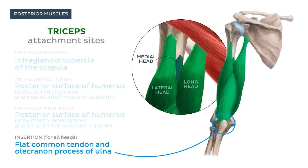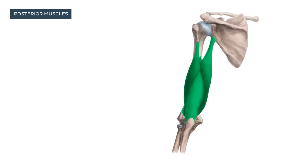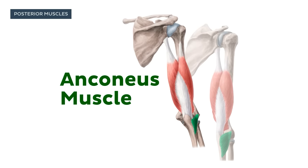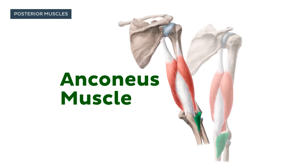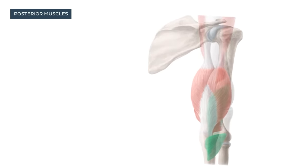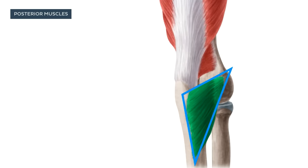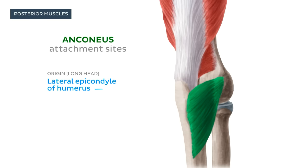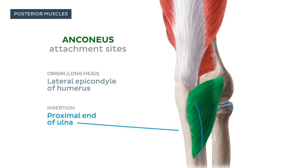Although the triceps brachii is by far the dominant muscle on the posterior arm, there is another small muscle often overlooked in this region: the anconeus muscle. It is a relatively small, triangular shaped muscle which is often blended with the lateral border of the triceps brachii tendon, and it too attaches to the proximal end of the ulna.